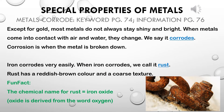The last important property of metals we are going to look at in Grade 5 is that metals corrode. Corrosion is basically when a metal gets broken down. If you look at page 76, you will see a heading that says 'Metals rust or tarnish.' If you've ever left something outside, you may have noticed it got a bit of rust on it.